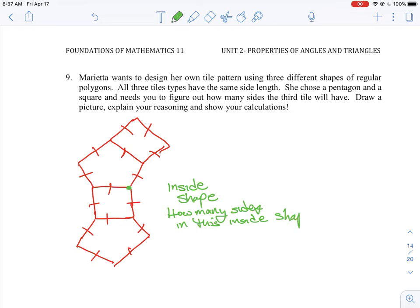We could start to count them - we have one side here, two sides here, three sides here, four sides here - and we would keep going all around. If we could draw the full tile accurately we would be able to count the number of sides on this inside shape, but there's probably another way we could do it and we can calculate it mathematically.